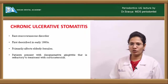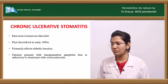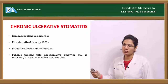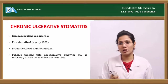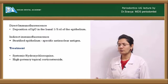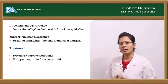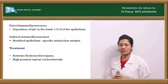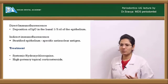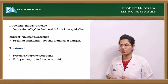Chronic ulcerative stomatitis is a rare mucocutaneous disorder, first described in the early 1900s, primarily affecting elderly females. Patients present with desquamative gingivitis that is refractory to treatment — a key distinguishing feature. Under direct immunofluorescence, IgG deposits are found at the basal one third of the epithelium. Under indirect immunofluorescence, stratified squamous epithelium-specific anti-nuclear antigens are seen. Treatment includes systemic hydroxychloroquine or high-potency corticosteroids.